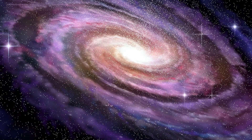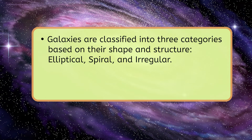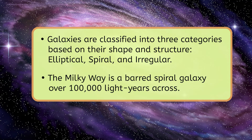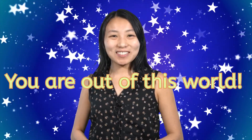You did an amazing job classifying galaxies like a true astronomer today. Let's recap what we learned: galaxies are classified into three categories based on their shape and structure — elliptical, spiral, and irregular. The Milky Way galaxy is a barred spiral galaxy that is over 100,000 light-years in diameter. Thank you for joining me today to learn all about the different types of galaxies and how astronomers classify them. Be sure to complete the practice questions and extension activities that go with this lesson as you continue your journey into the universe. And as always, remember: you are out of this world!